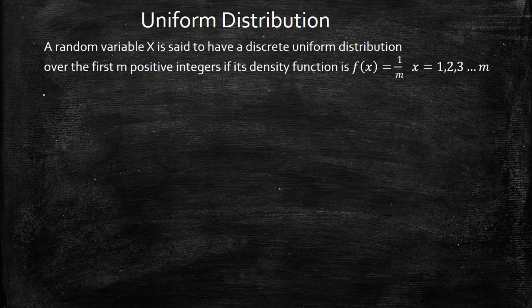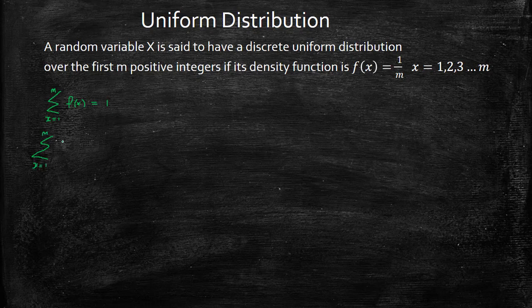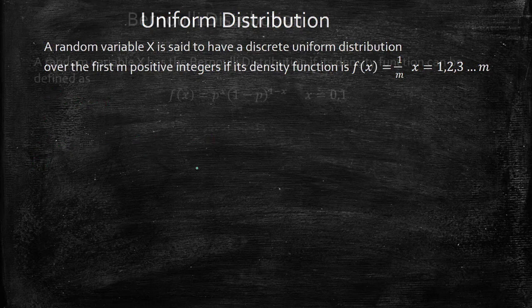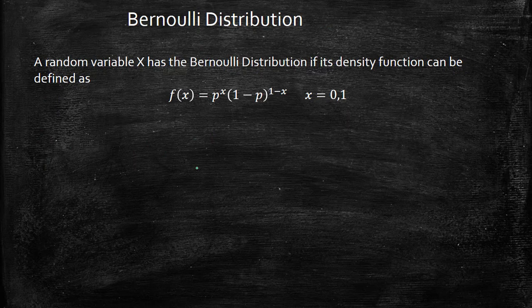For a uniform distribution, a random variable is said to have a uniform distribution if f(x) equals 1 over m, for x equal to 1 up to m. So our summation from x equals 1 to m of f(x) must equal 1. Our f(x) is 1 over m, so the summation from x equals 1 to m of 1 over m equals m times 1 over m, and those cancel to give us 1.